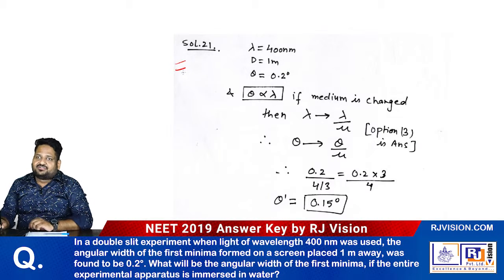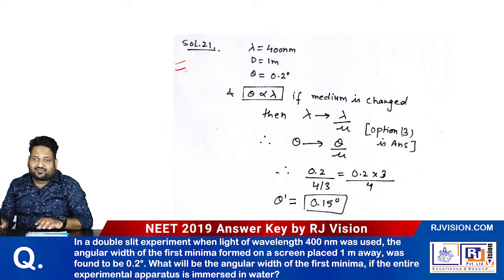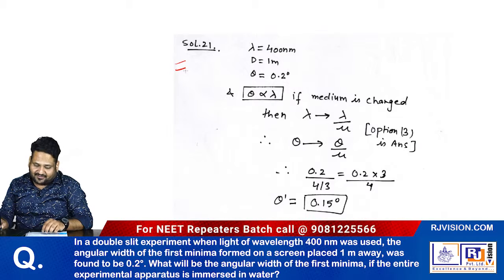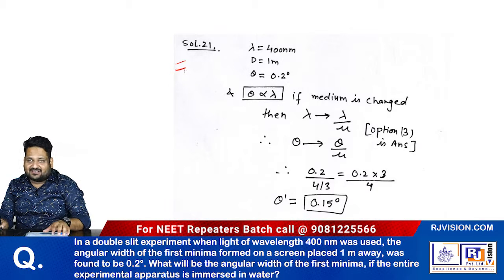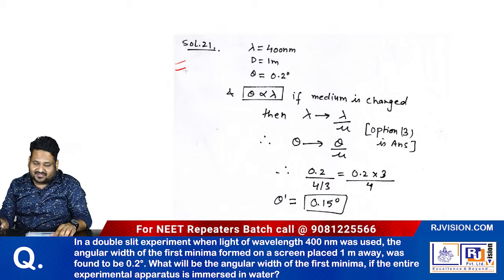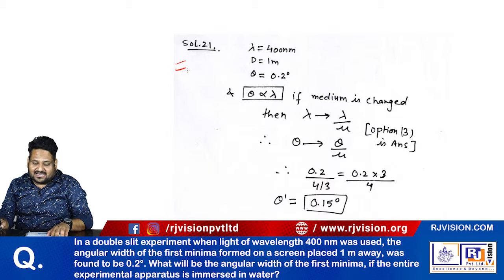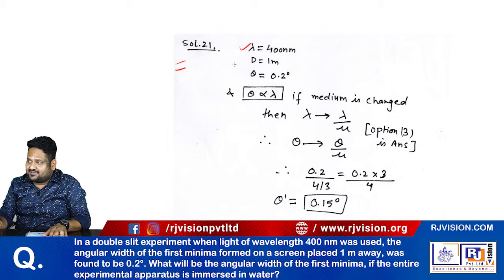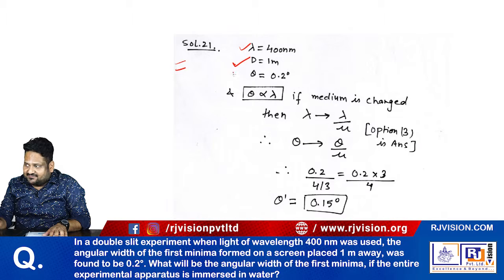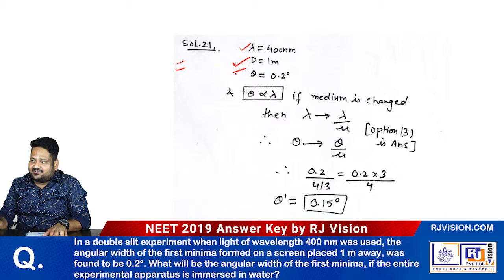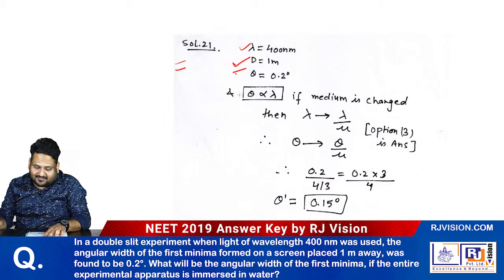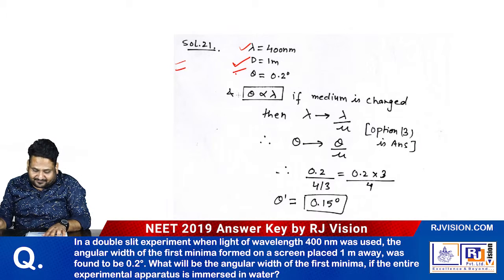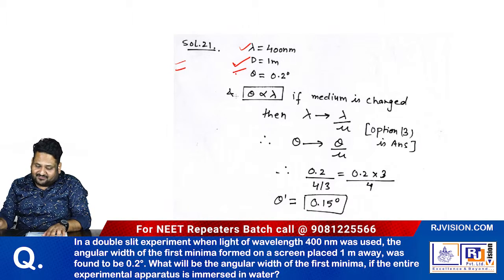In the 2019 NEET physics paper, question number 21 is from wave optics. In Young's double slit experiment, when light of wavelength λ = 400nm is used with capital D = 1m, the theta initially is given as 0.2 degrees. That is your angular width for the first minima formed on a screen.